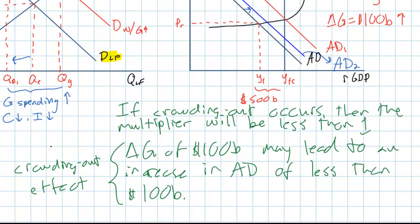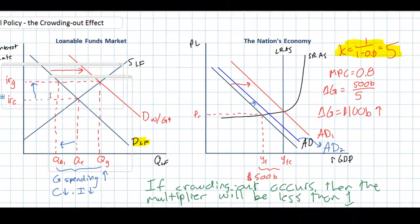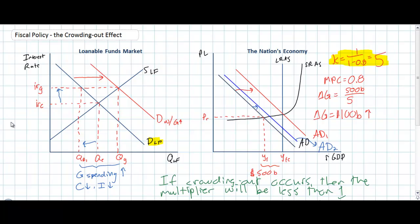The crowding out effect indicates that expansionary fiscal policy will be much less effective than the multiplier effect suggests. The multiplier effect indicates that an increase in G will multiply itself through further increases in private spending. The crowding out effect indicates the exact opposite: an increase in G will crowd out private spending and therefore be very ineffective at increasing aggregate demand and output in the economy.